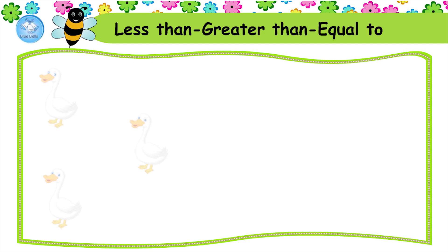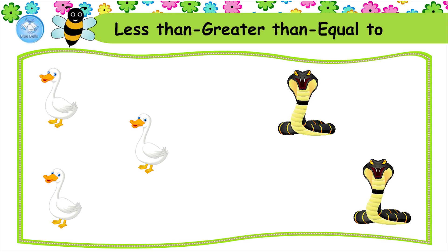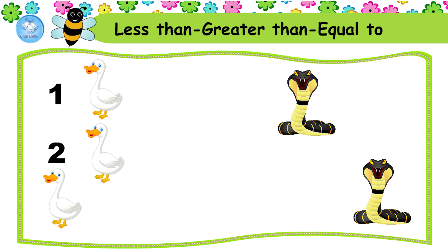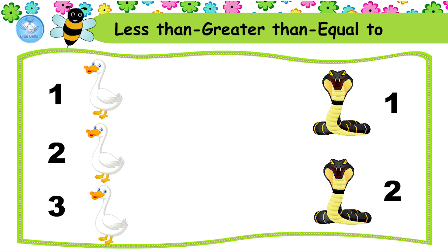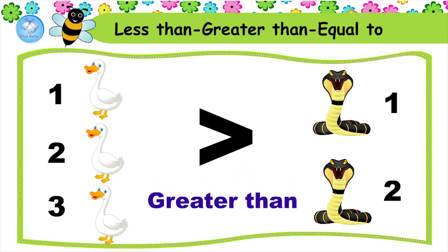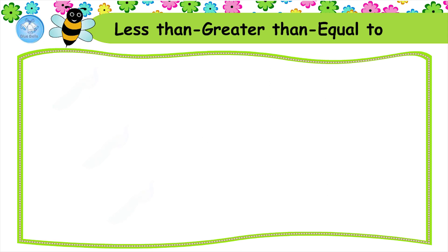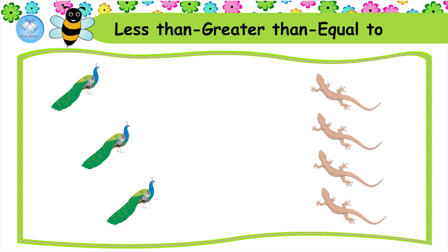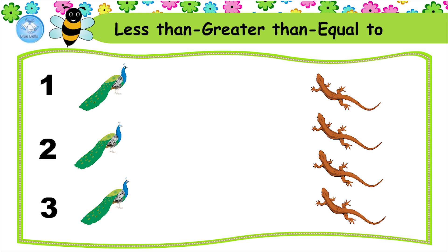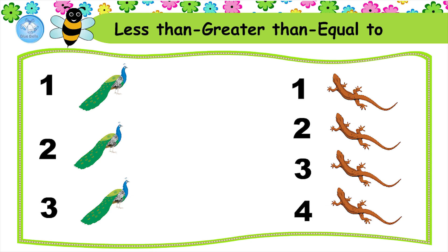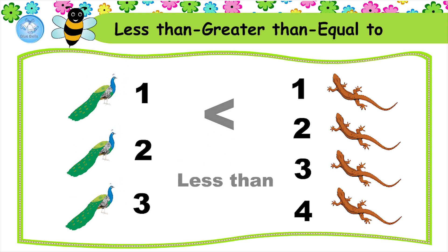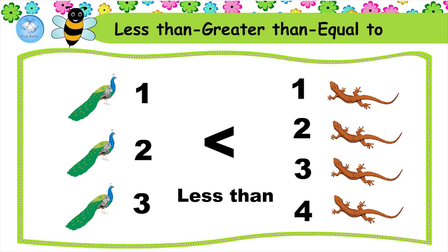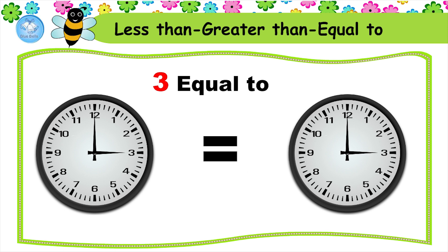Less than, greater than, equal to. We have three ducks and we have two snakes. Let's count: 1, 2, 3 and 1, 2. We have to find which is greater. Three ducks are greater than two snakes. We have three peacocks and four lizards. Let's count: 1, 2, 3 and 1, 2, 3, 4. Three peacocks are less than four lizards. Three equals three.